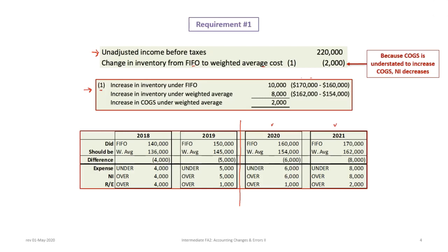Because of the change in policy, the increase in cost of goods sold under weighted average would only be $2,000, so that is the amount we need to reduce retained earnings by. Cost of goods goes up because inventory under weighted average is lower, and if cost of goods goes up, retained earnings drops. Looking back at 2018, FIFO inventory was $140,000 but under weighted average it would be $136,000 — overstated by $4,000. That means inventory that should have been expensed was not, so net income and retained earnings are overstated.